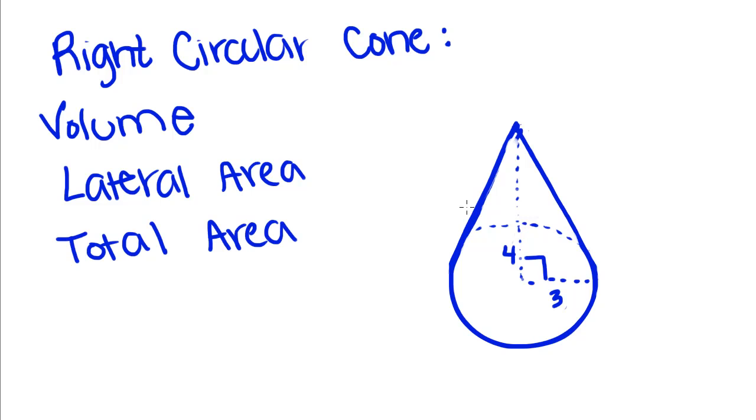Okay, so today we're going to switch gears a little bit and talk about the right circular cone. And like the other kinds of 3D objects, we're going to talk about its volume, its lateral area, and its total area.